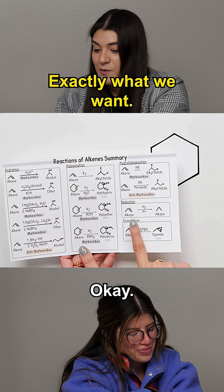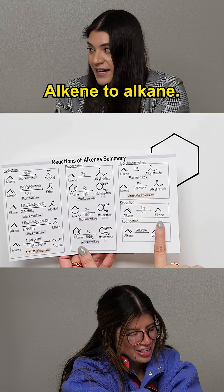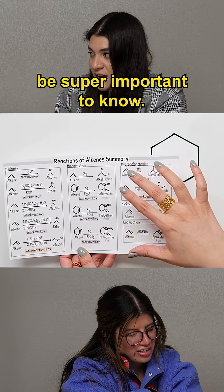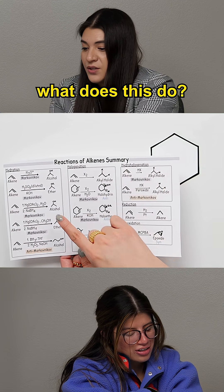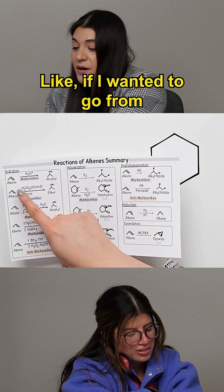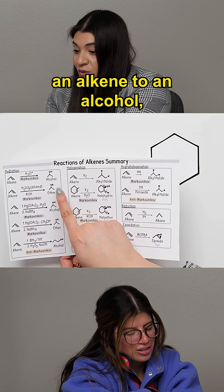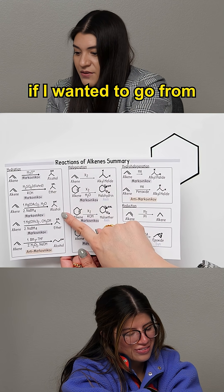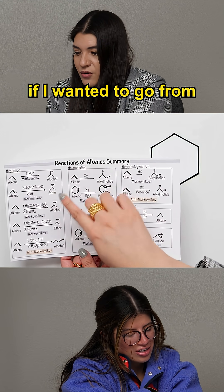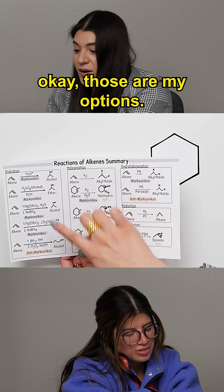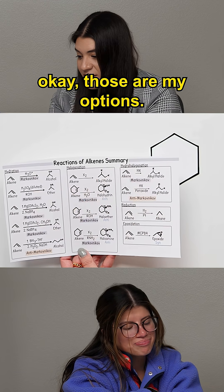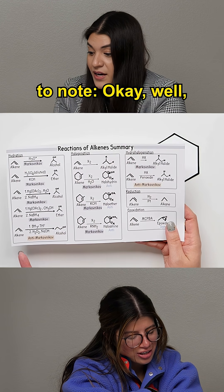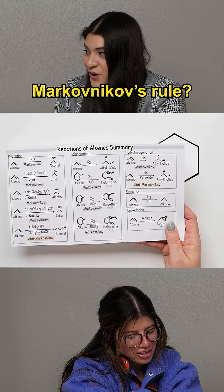Or in this case, reduction — alkene to alkane — which is exactly what we want. It's super important to know: if I wanted to go from an alkene to an alcohol, these are my different options. If I wanted to go from an alkene to an ether, those are my options. It's also important to note what follows Markovnikov's rule and what does not.